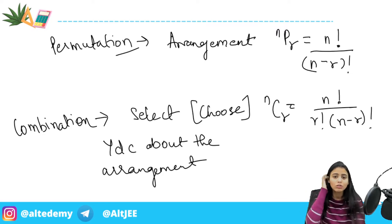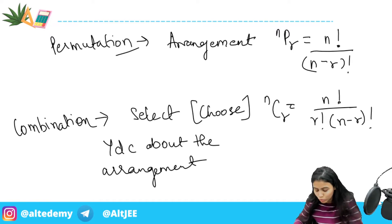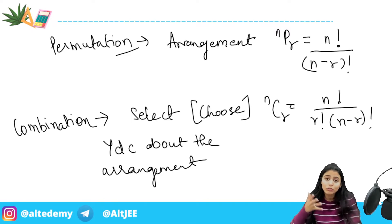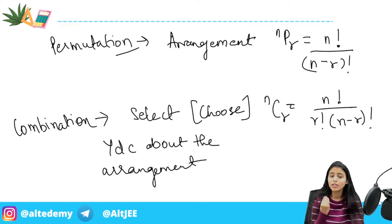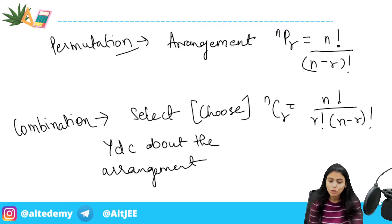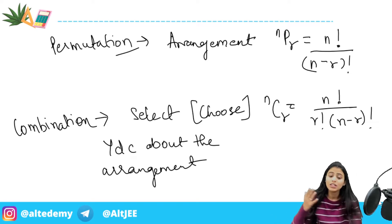One important thing: when you see a permutation and combination question and feel like skipping it, you should not skip it. Permutation and combination is a topic that is never going to leave you. Even as a software developer, I used to solve aptitude questions for company clearance exams and the majority of questions involved permutation and combination. Anyone who is strong in this topic can clear aptitude tests very easily.